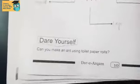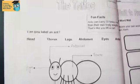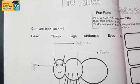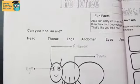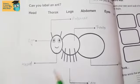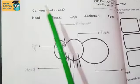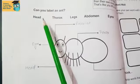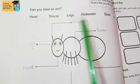Now everyone, come to page number 10 of your workbooks. Write down the date. So what do we have here? Can you label an ant? Can you label an ant's body parts? Here we have words and body parts given, and you have to label them.